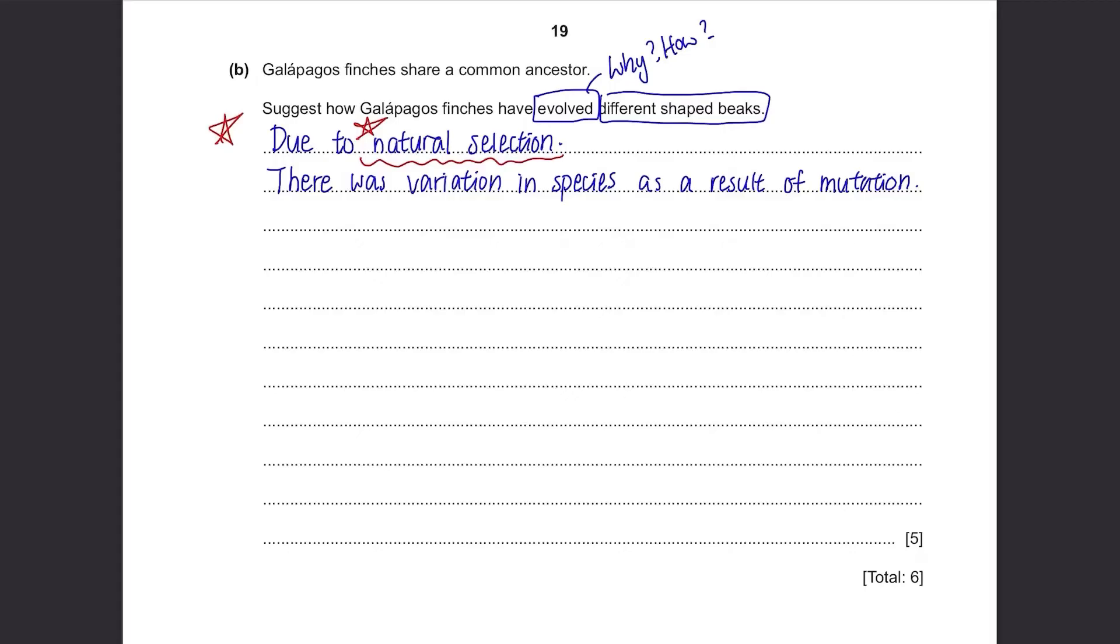Then somehow, it's possible that those birds with unique beak shape began to find food better and survive better, reproducing offspring with beaks like them.